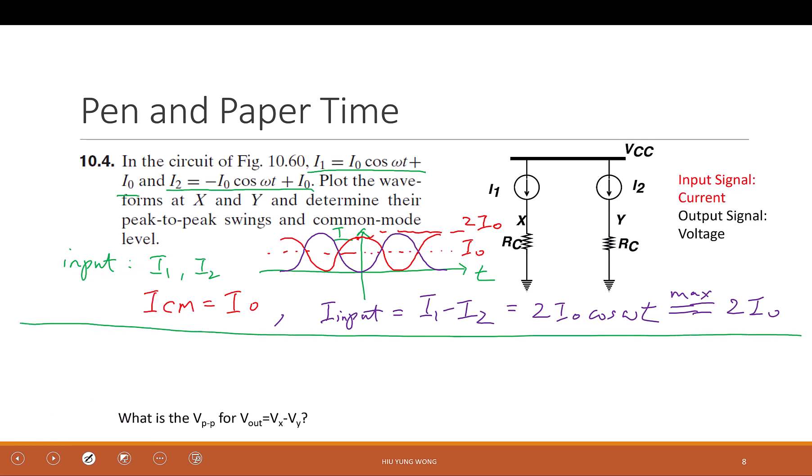How about the output? Definition first. What is V out? How will you define it? Actually, I am seeing these two are the output, X and Y. What is the output? Vx minus Vy, this is given. So what is Vx? I1 times Rc. What is Vy? I2 times Rc. So the whole thing, take out I1 minus I2. And we already know I1 minus I2 equals, I just use the peak, the maximum, Rc times 2I0.